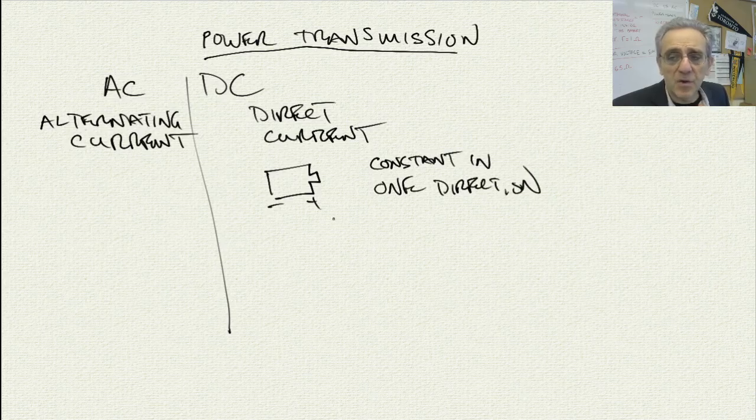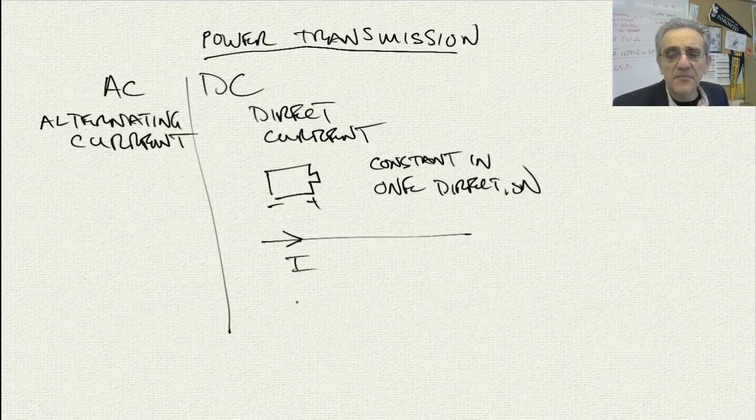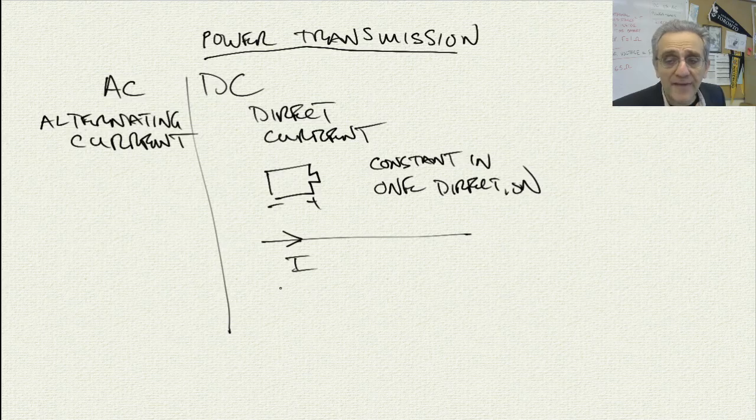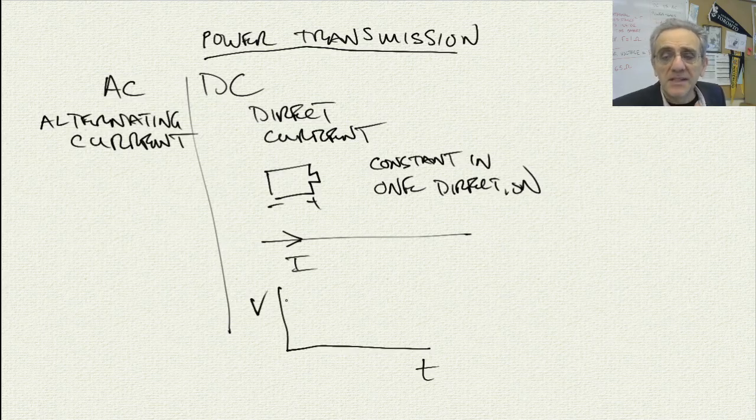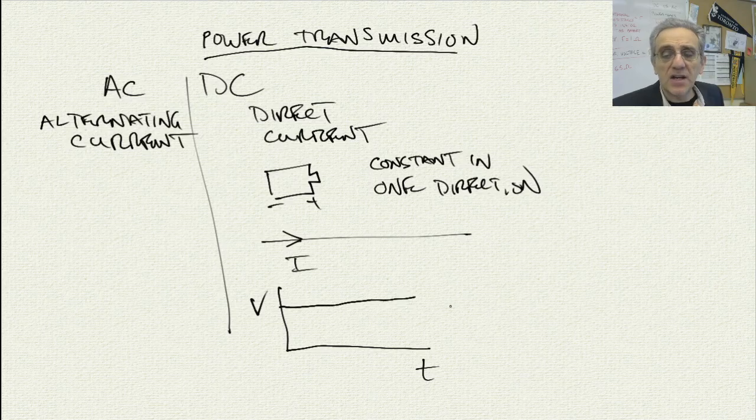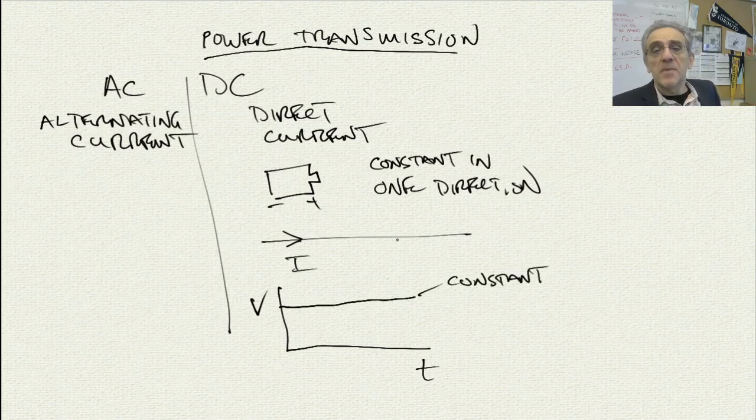So if I have a wire here, essentially current travels in only one direction. And if I also have a graph of the voltage versus time, in DC the voltage is a constant value. In other words, it doesn't change.